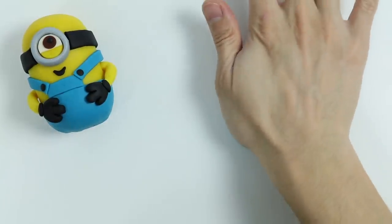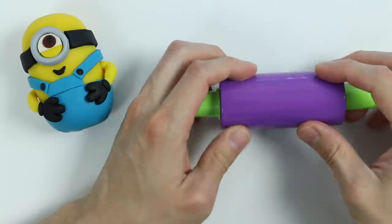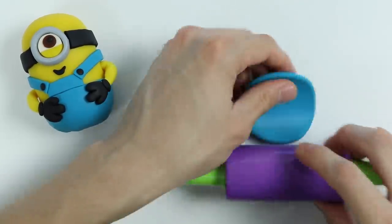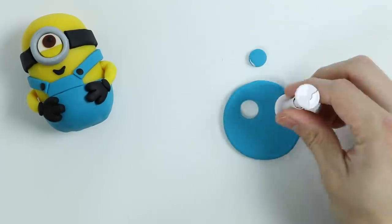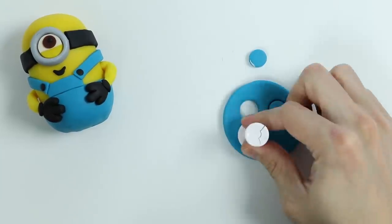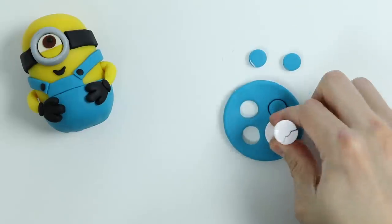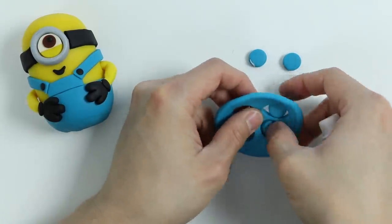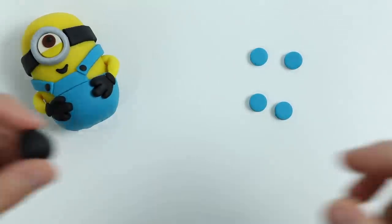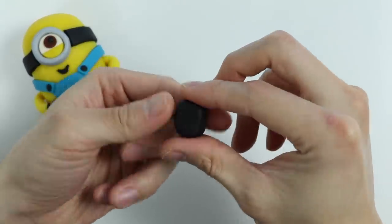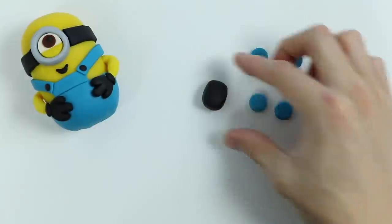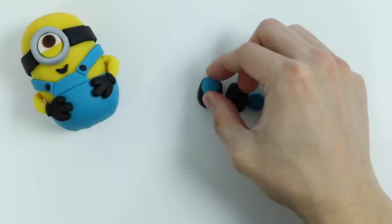Now let's make his legs. Roll out some blue Play-Doh. Stamp out some circles. Now let's shape this black Play-Doh into a shoe. Make one more. Now let's stack the blue circles.